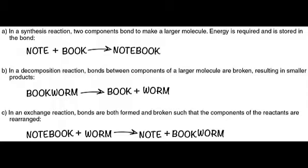In theory, any chemical reaction can proceed in either direction under the right conditions. Reactants may synthesize into a product that is later decomposed. Reversibility is also a quality of exchange reactions. For example, A + BC → AB + C could then reverse to AB + C → A + BC. This reversibility of a chemical reaction is indicated with a double arrow: A + BC ⇌ AB + C. Still, in the human body, many chemical reactions do proceed in a predictable direction — either one way or the other. This more predictable path can be thought of as the path of least resistance, because typically the alternate direction requires more energy.